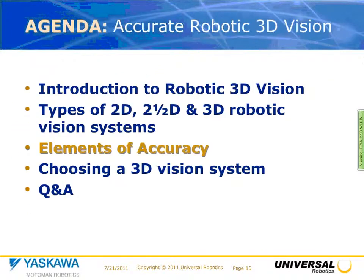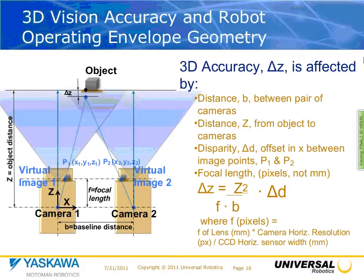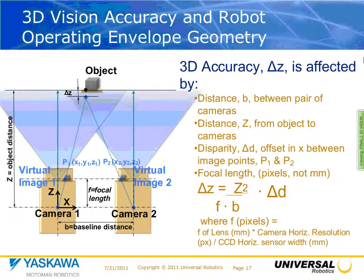Let's move into the elements of accuracy. For binocular vision, accuracy is driven by a number of things. Looking at the diagram, we have two cameras — camera one and camera two. The baseline distance between cameras in most binocular 3D vision systems is somewhere between 100 and 200 millimeters maximum. You'll see the focal length — the pair of cameras must be identical in most situations — and the Z object distance to your part or object of interest.